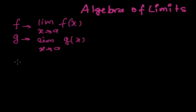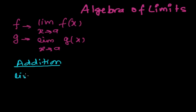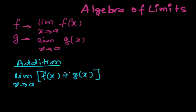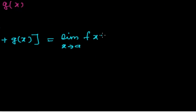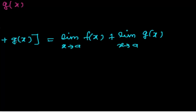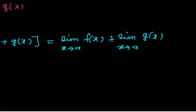We are going to learn subtraction, addition, multiplication, and division one by one. First, let's study addition. Suppose the limit as x tends to a of f(x) plus g(x). In that case, the limit of the sum equals the limit as x tends to a of f(x), plus the limit as x tends to a of g(x). Simply put, the limits of two functions can be added easily. This is a formula: the limit of the addition of two functions equals the sum of their individual limits.